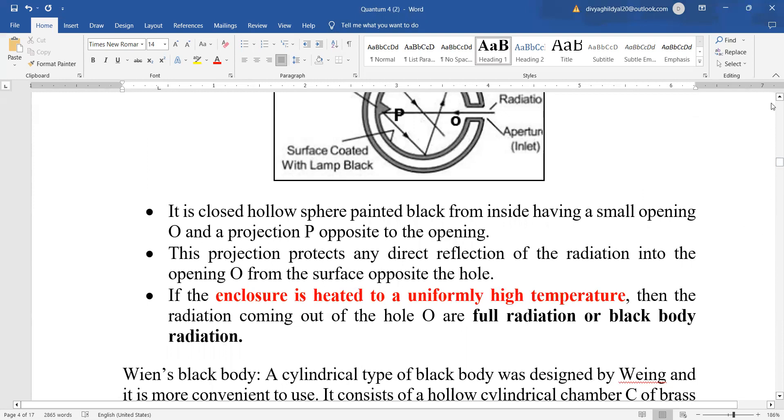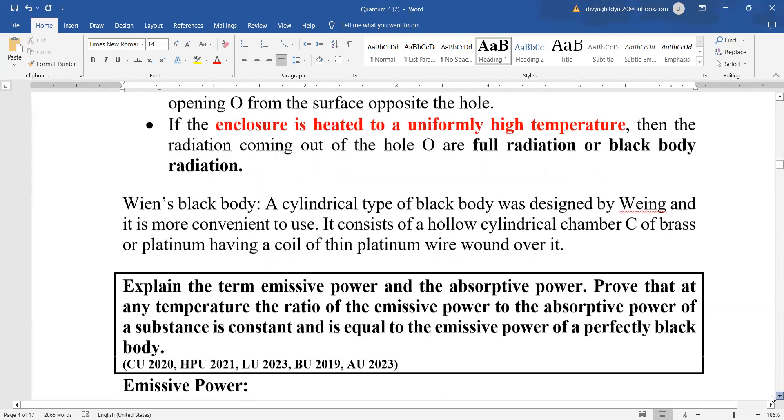The projection protects any direct reflection of radiation. When the enclosure is heated to a uniformly high temperature, then the radiation coming out of the hole are full radiation or the black body radiation.